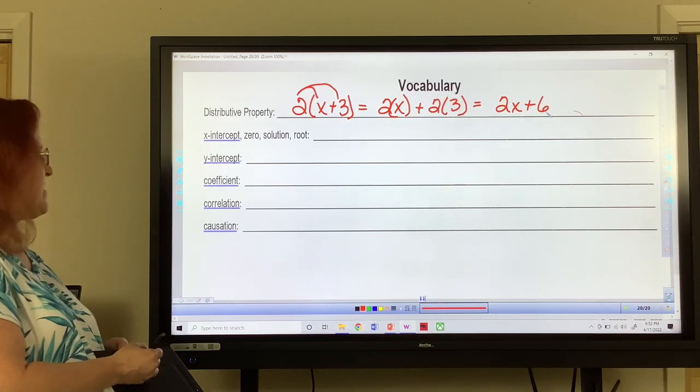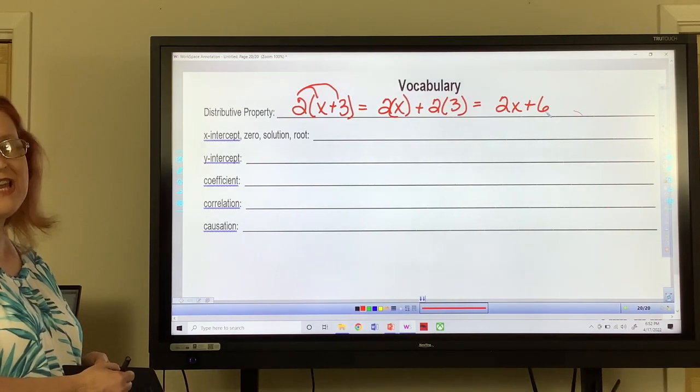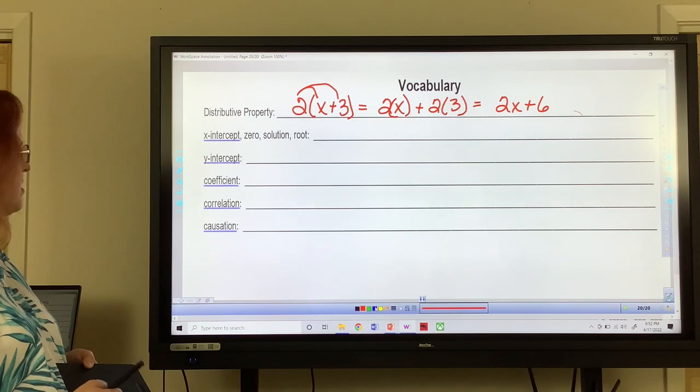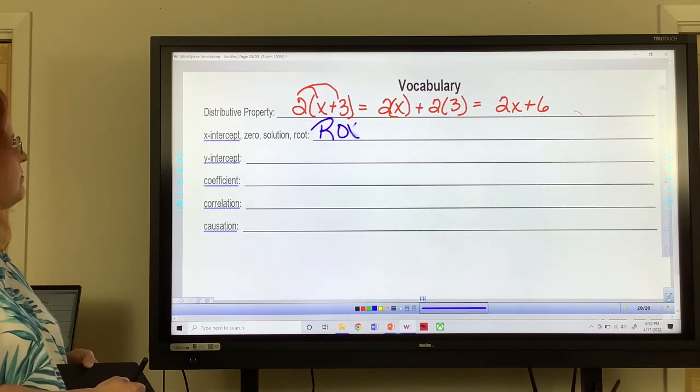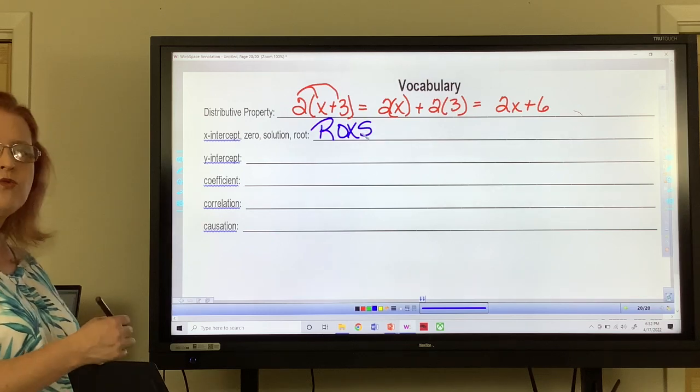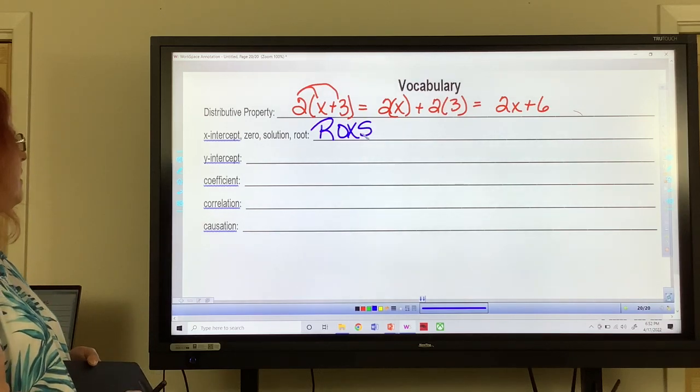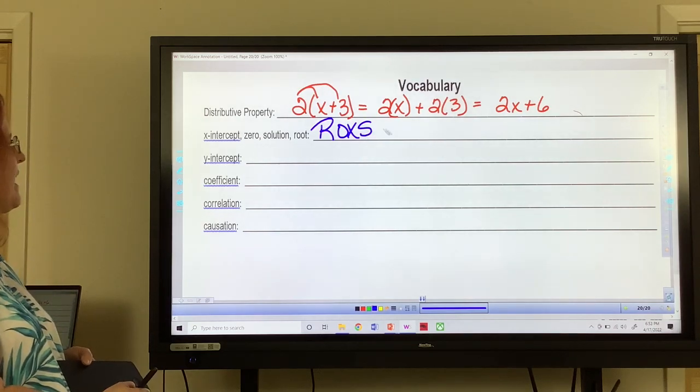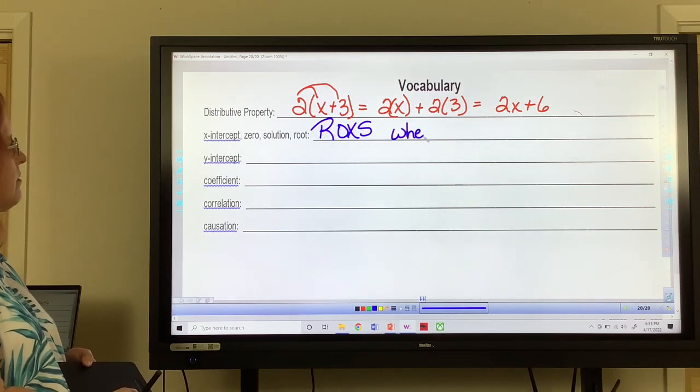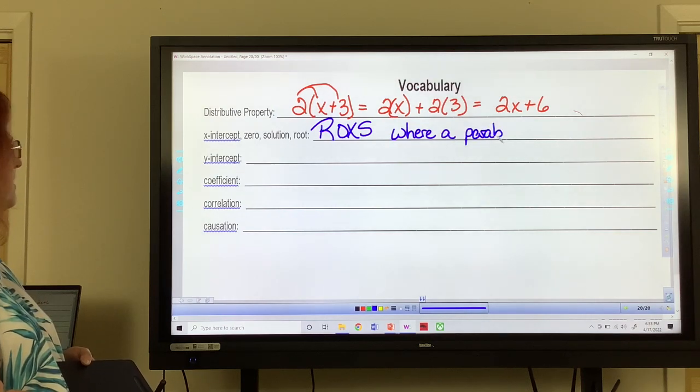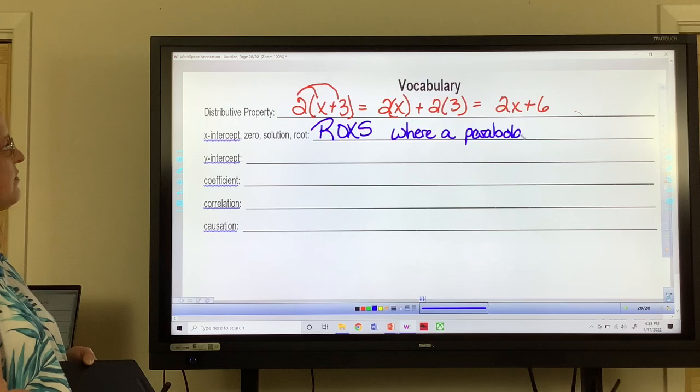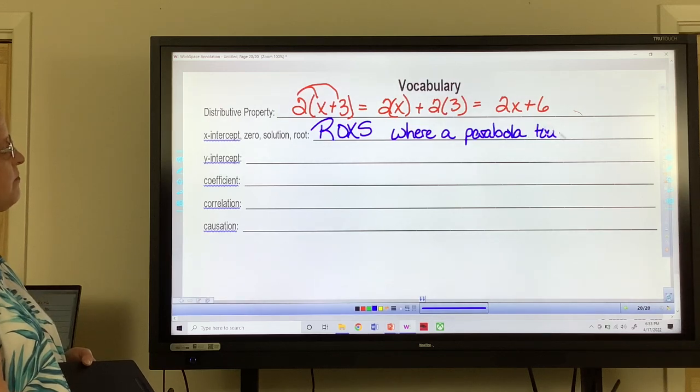X intercepts, zero, solution and root. These are your rocks, and rocks sit on the ground. So these are where a quadratic, a parabola, now I guess I should put that on there, touches the x-axis.